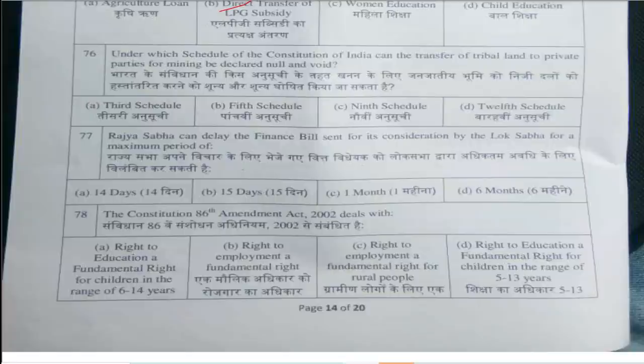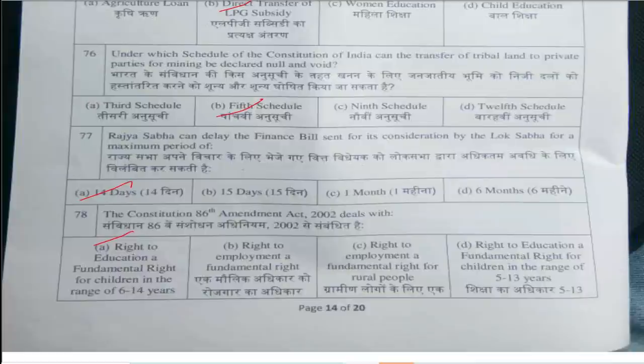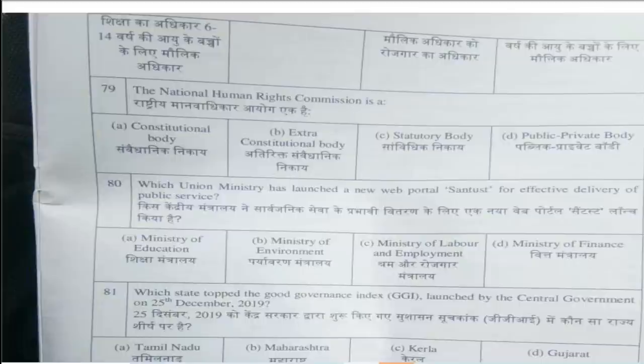Question number 74: Which of the following are the recommendations of the Balwant Rai Mehta Inquiry Committee? Answer is option D, all of these. Question number 75: PAHAL scheme is related to — answer is option B, direct transfer of LPG subsidy. Question number 76: Under which schedule of the Constitution of India can the transfer of tribal land to private parties for mining be declared null and void? Answer is option B, Fifth Schedule.